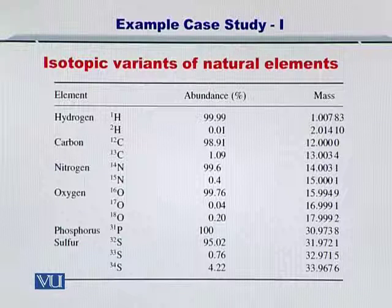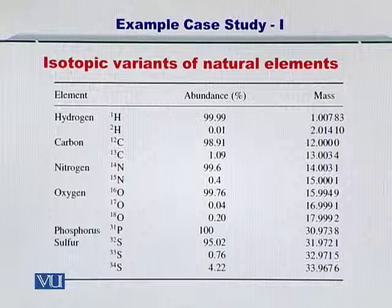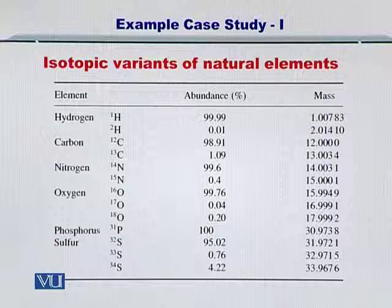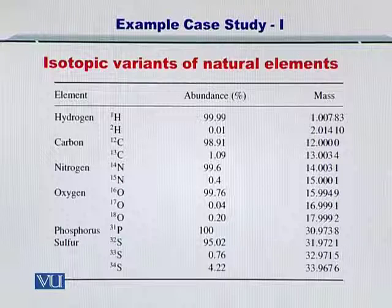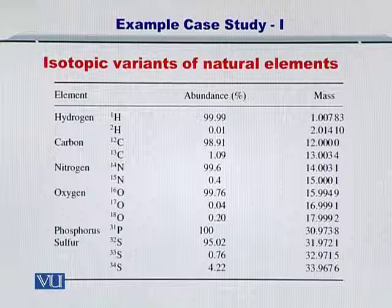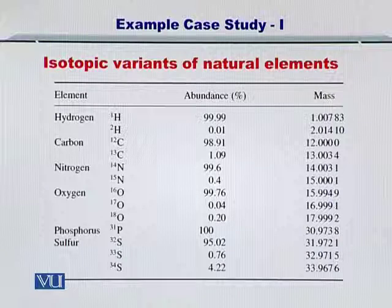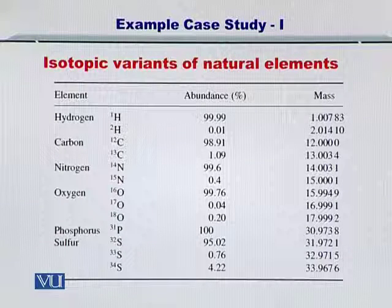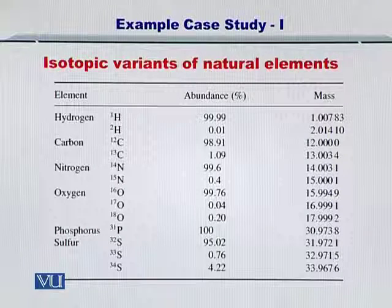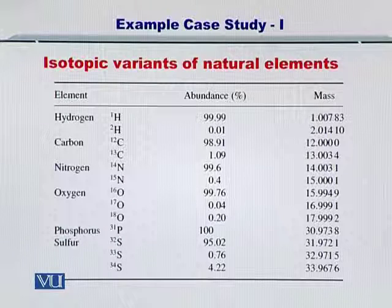All proteins, as you know, comprise of these elements that are listed in front of you. In order to calculate the monoisotopic mass, you have to look at the most abundant isotope. For instance, hydrogen-1 is the monoisotopic mass for hydrogen. For carbon, carbon-12 or 12.00 Daltons is the monoisotopic mass. For nitrogen, 14.0031 is the monoisotopic mass, and so on and so forth.